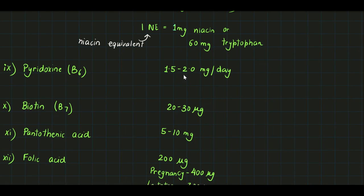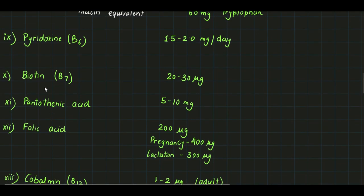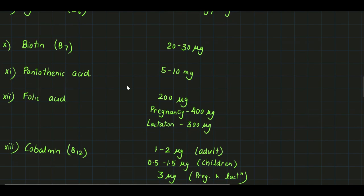For biotin, that is B7, it is 20 to 30 micrograms per day. For pantothenic acid, it is 5 to 10 milligrams. For folic acid, it is 200 micrograms; for pregnant women, it is 400 micrograms.